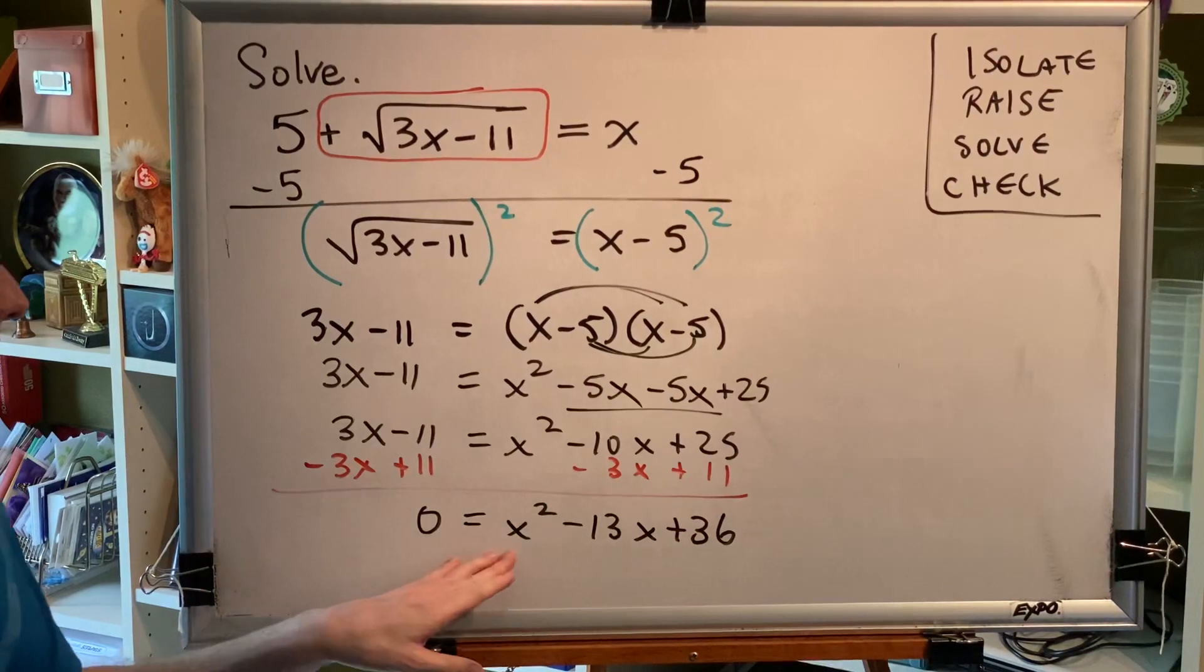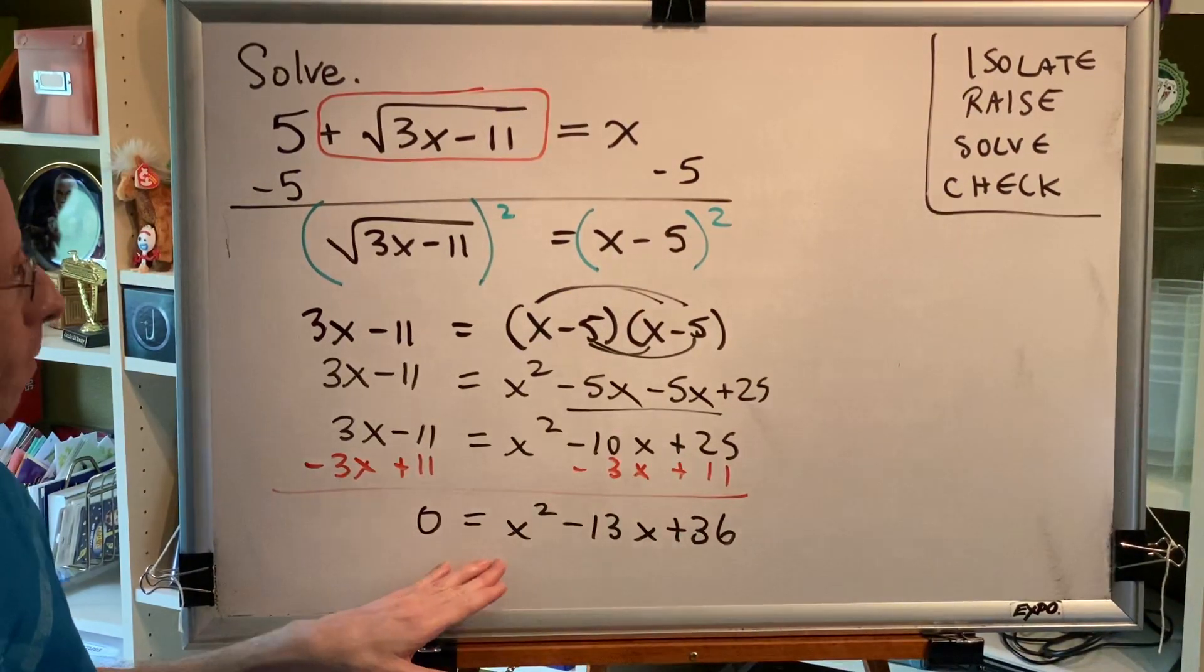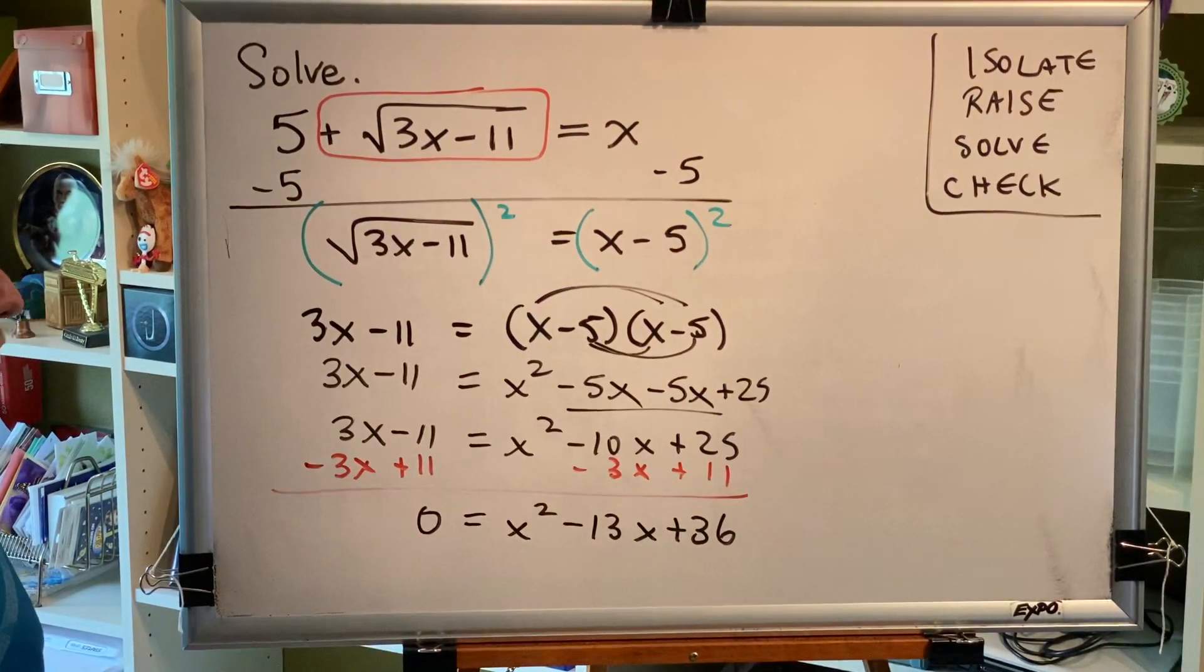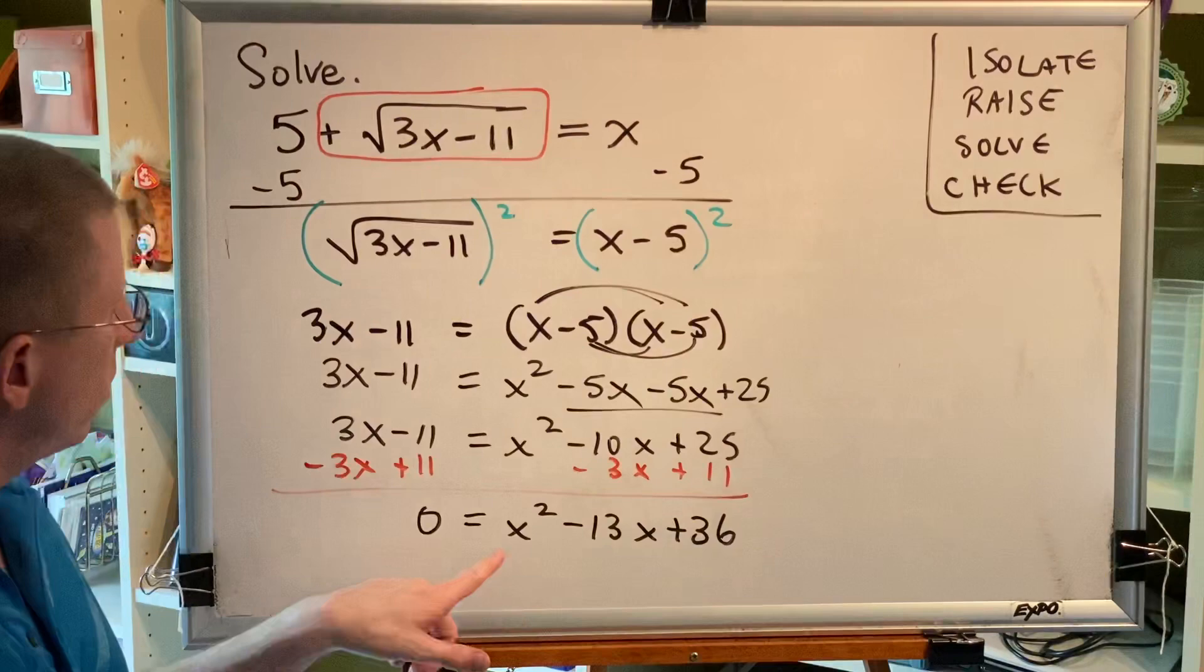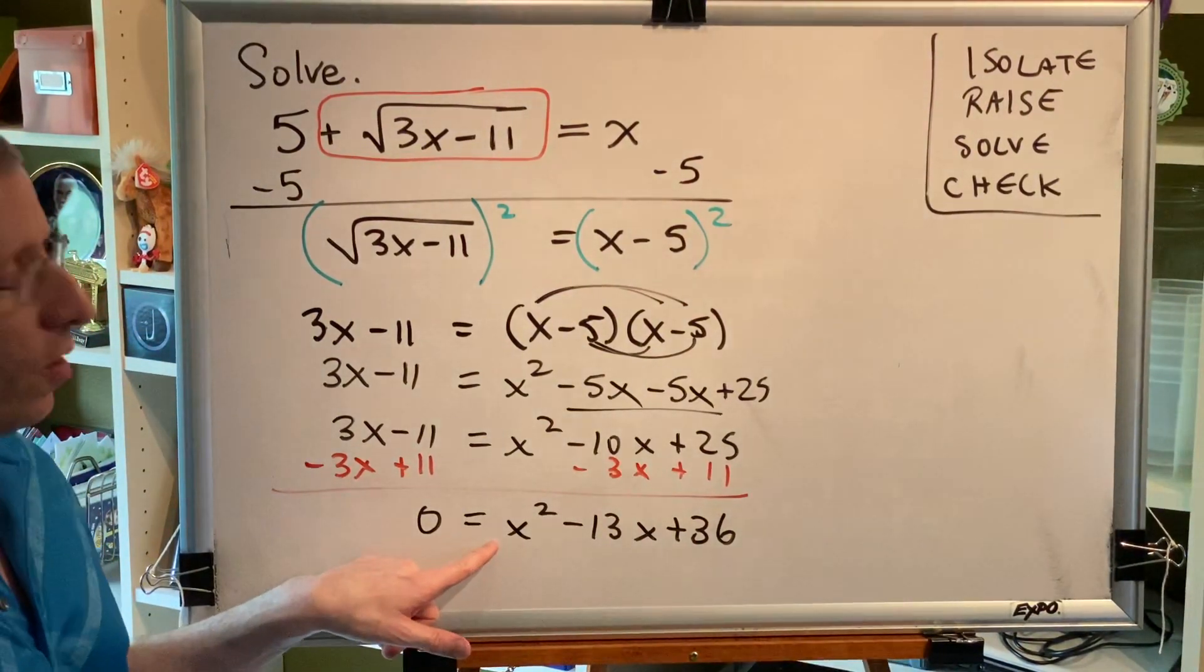So now I can factor, I can use the quadratic formula, I can complete the square. I have many methods for solving this equation. I'm going to choose factoring here because it's so easy. The coefficient of the variable squared term is 1. So to factor this,